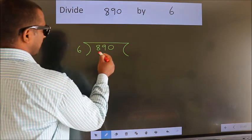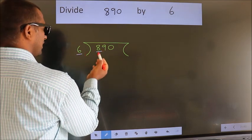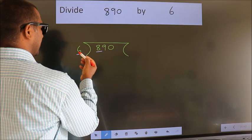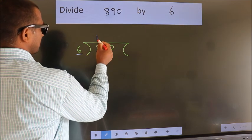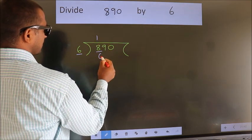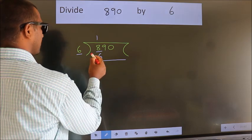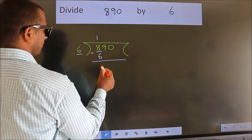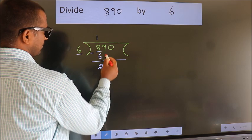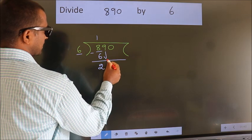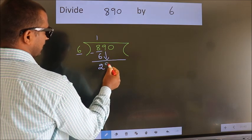Here we have 8, here 6. A number close to 8 in the 6 table is 6 × 1 = 6. Now we should subtract. We get 2. After this, bring down the beside number — so 9 down.